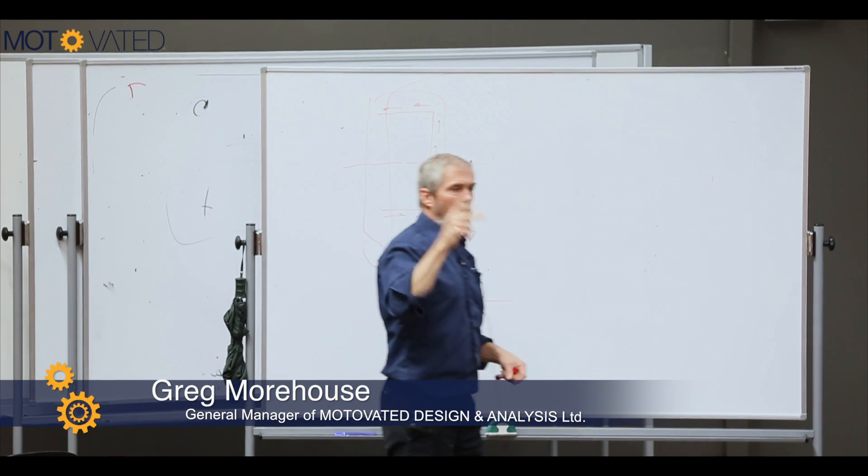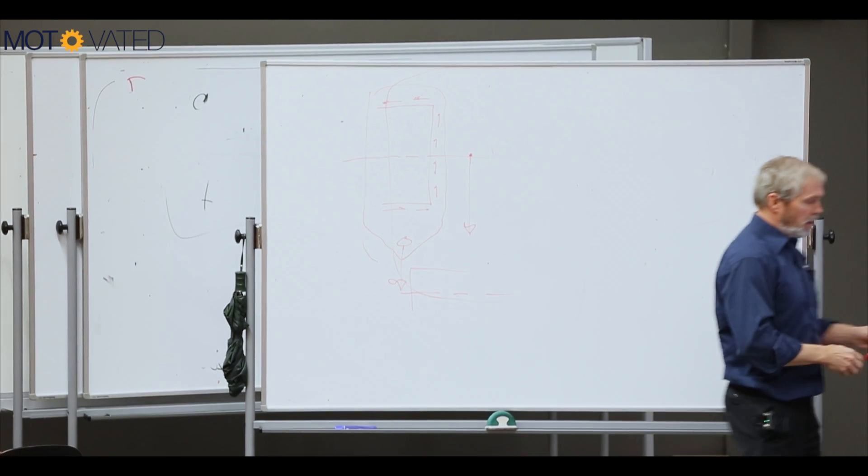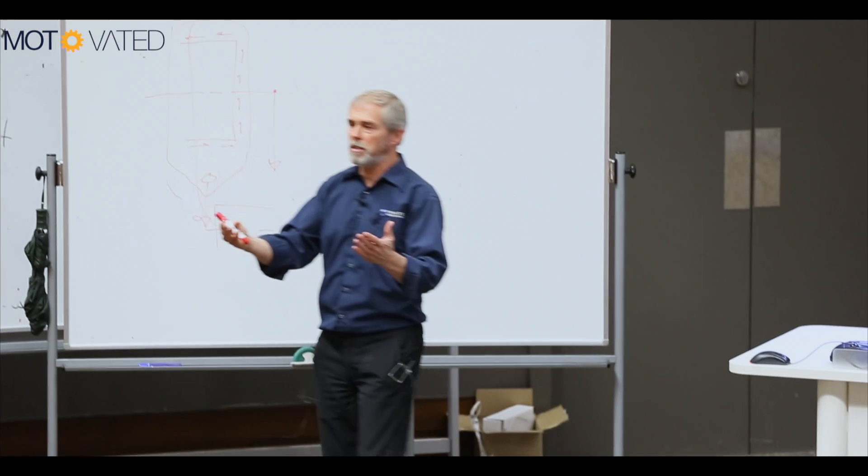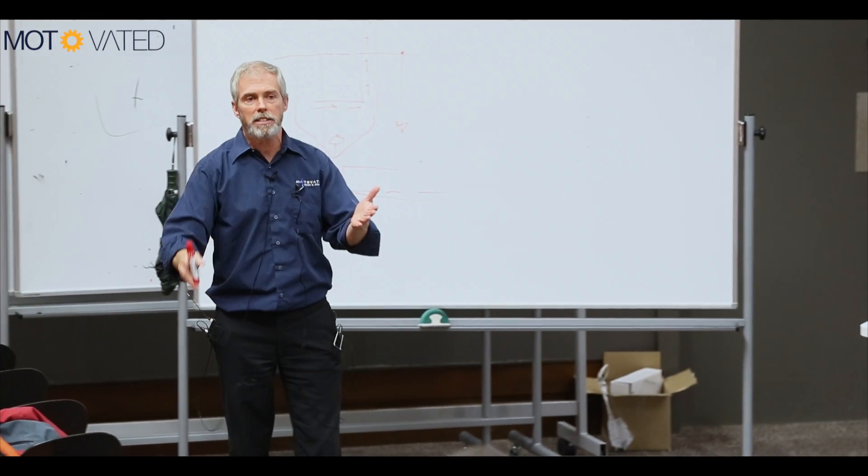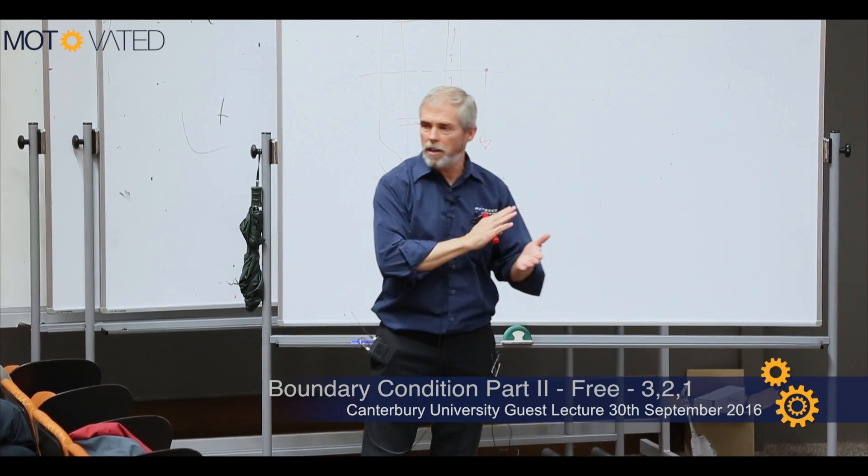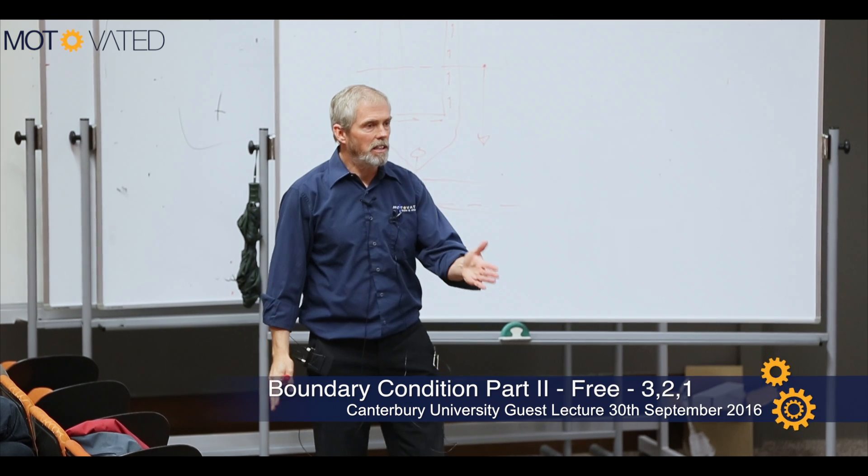If you're thinking about a part and you're going to machine it, and you want to make a plane to start from. So you take this piece of casting. Let's say we've got a casting. It's rough as guts. I want to face off something flat. So I run it through a mill to flatten one surface.